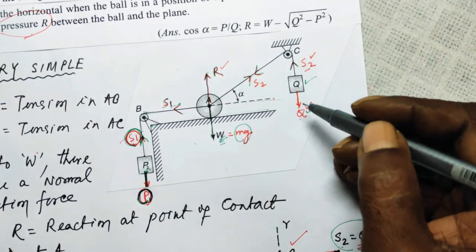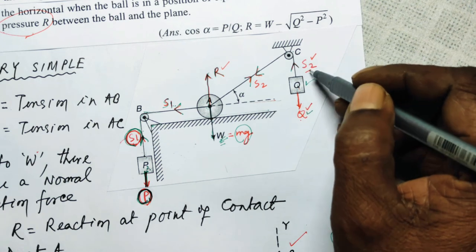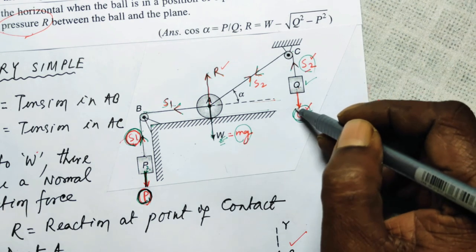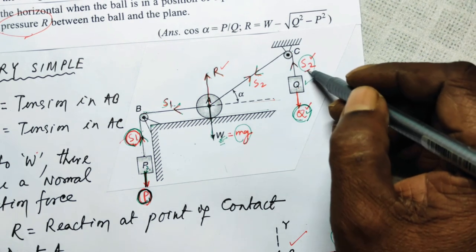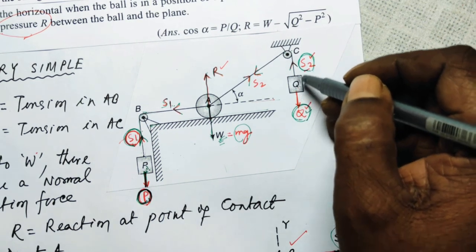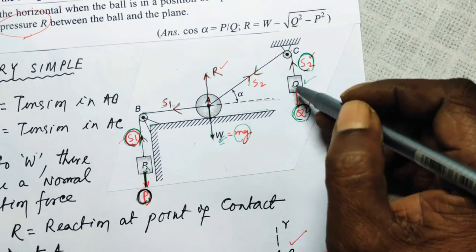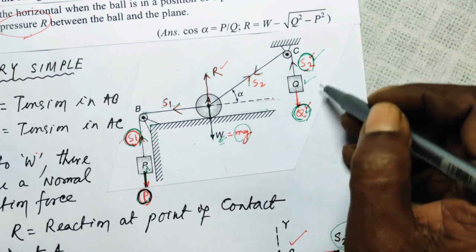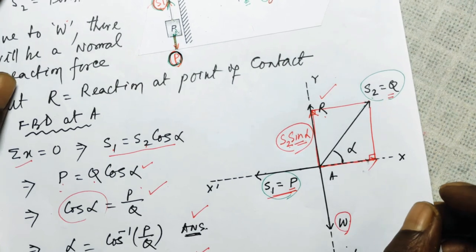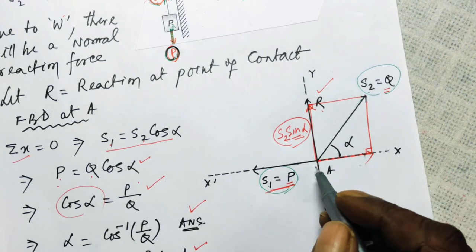Similarly, since Q is neither moving up nor moving down, S2 equals Q. If Q were moving down, its load Q should have been greater than S2; if moving up, S2 would be greater than Q. Since Q is stationary, S2 equals Q. That is the understanding, so let us apply the free body diagram at A.